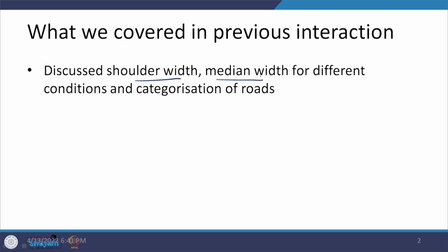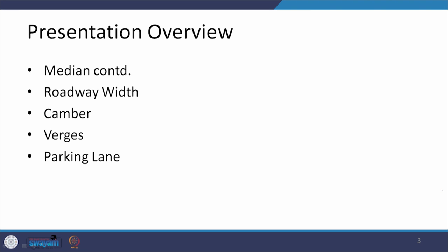Dear students, let us start again with our course on geometric design, module 2, which is related to cross-sectional elements. In our previous interaction, we discussed shoulders and median width for different road categories. Today we are going to continue with the median, roadway width, camber, verges, and parking lanes.